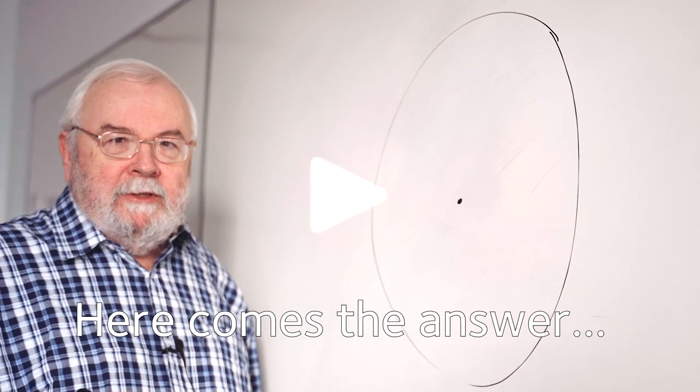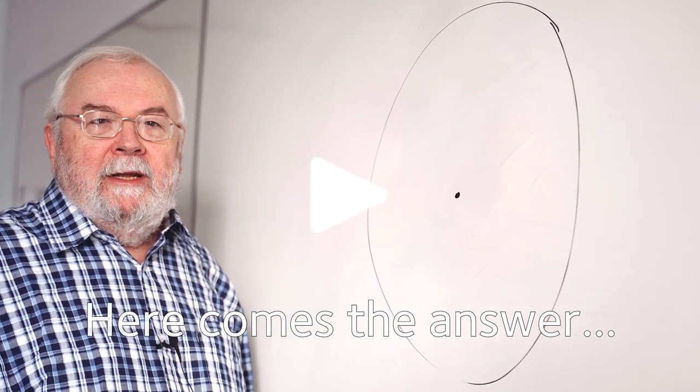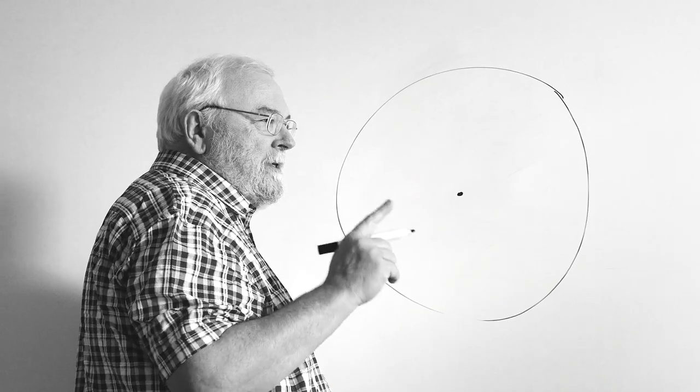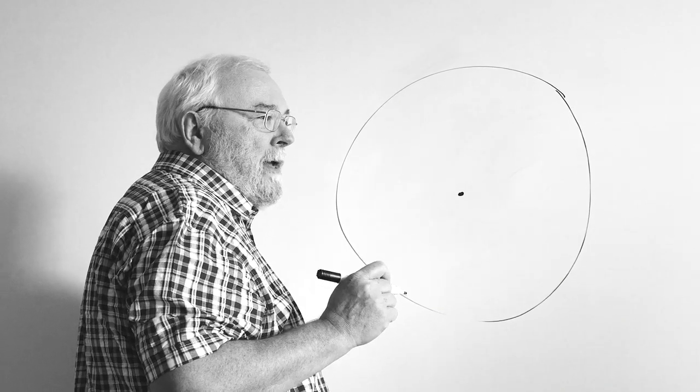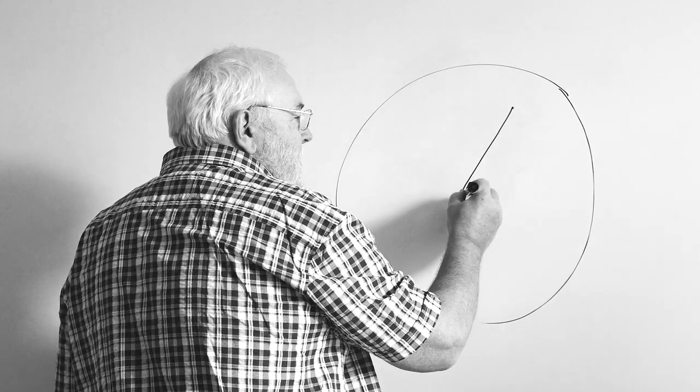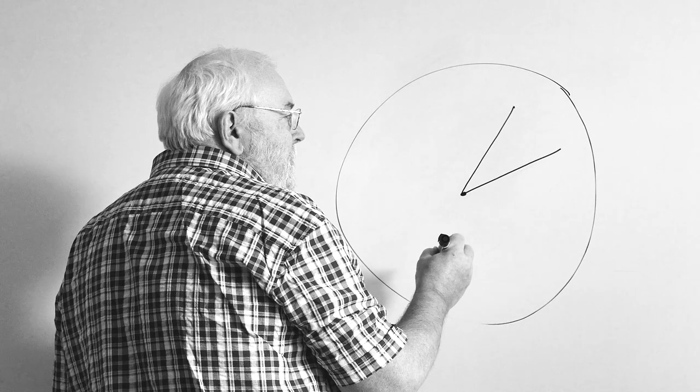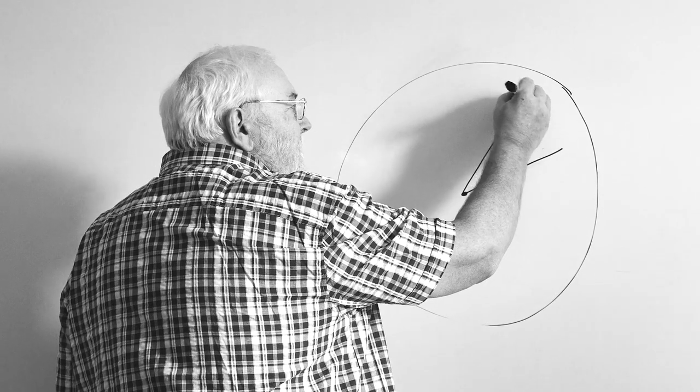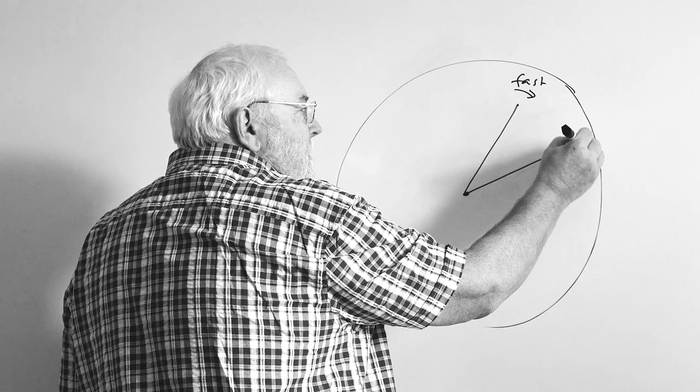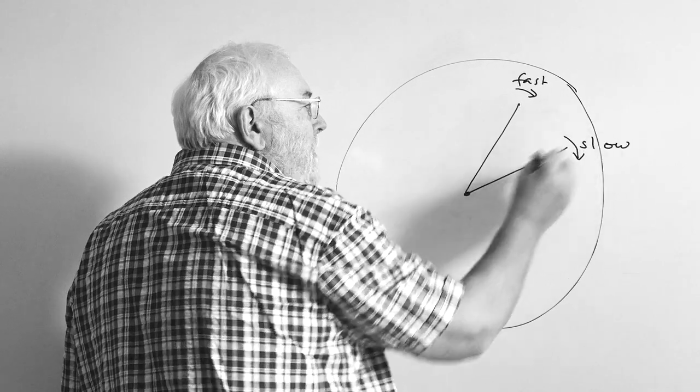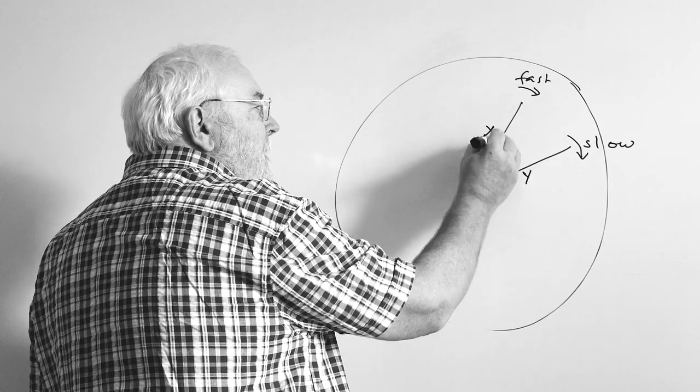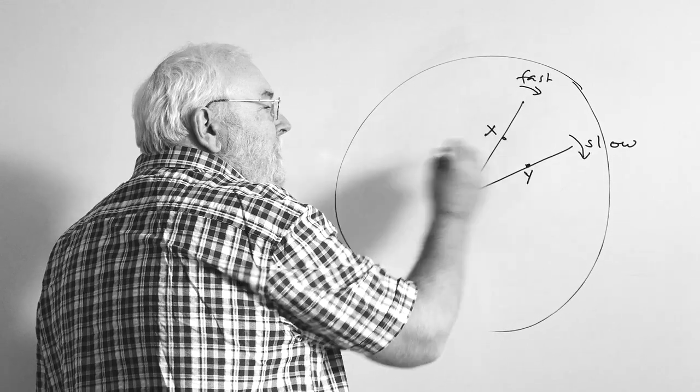So the secret to understanding this problem is that it's actually much easier than it looks. I want you to consider what happens when one hand passes another. So this is before the pass. You have two hands and this is the fast hand and this is the slow hand which is being caught up, and let's say the flies on these hands at this moment are X and Y.